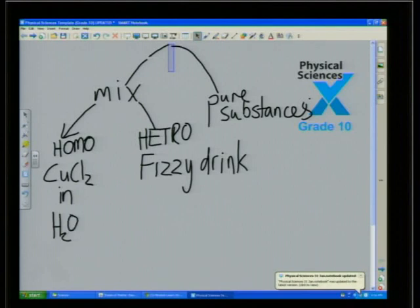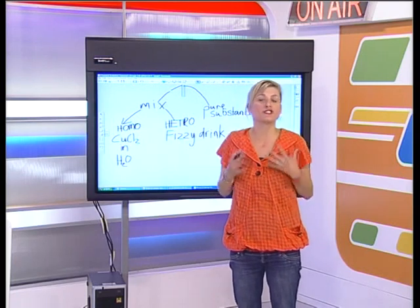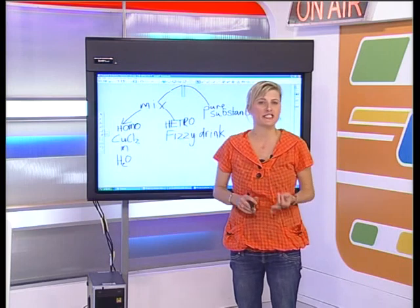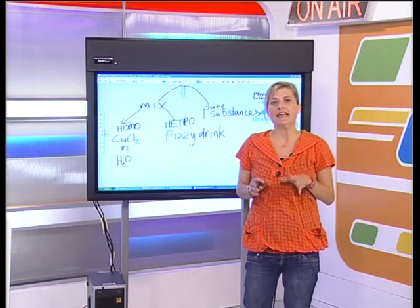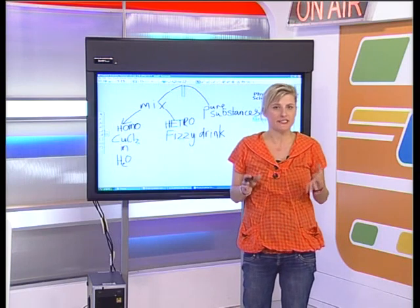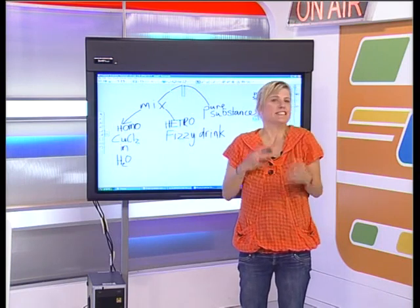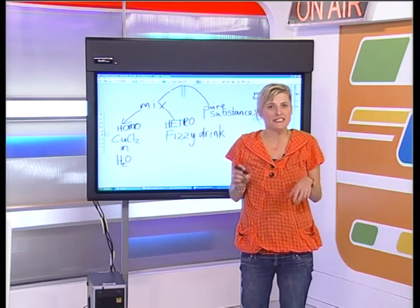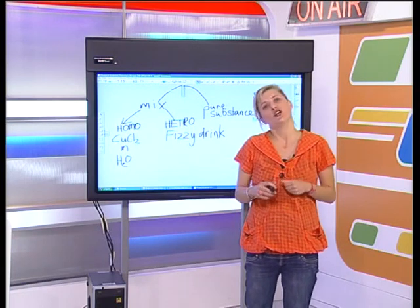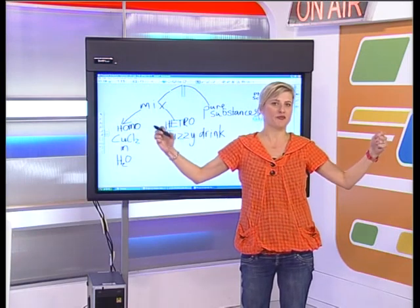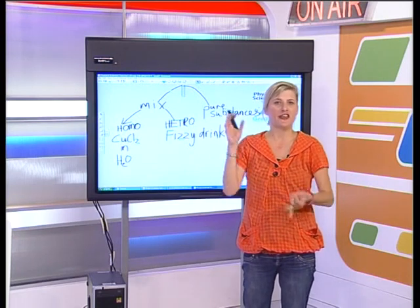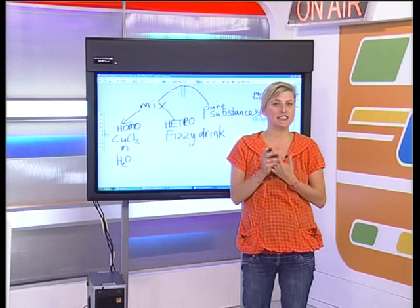Let's quickly summarize what we've learned about mixtures. If we have a mixture, two things are mixed together — it could be two gases, two liquids, a gas in a liquid, or a solid in a liquid. The most important thing is that no chemical reaction takes place. The individual properties still remain intact. I showed you this with the iron filings and sulfur — I could separate them again easily.